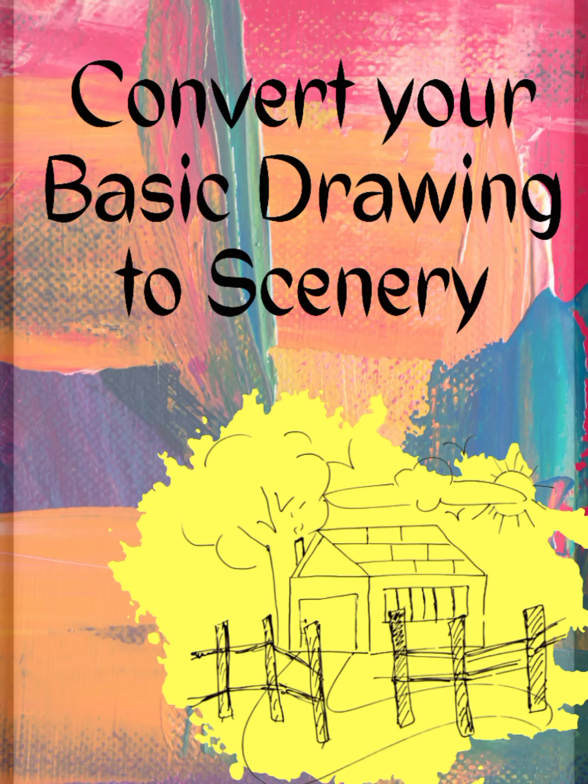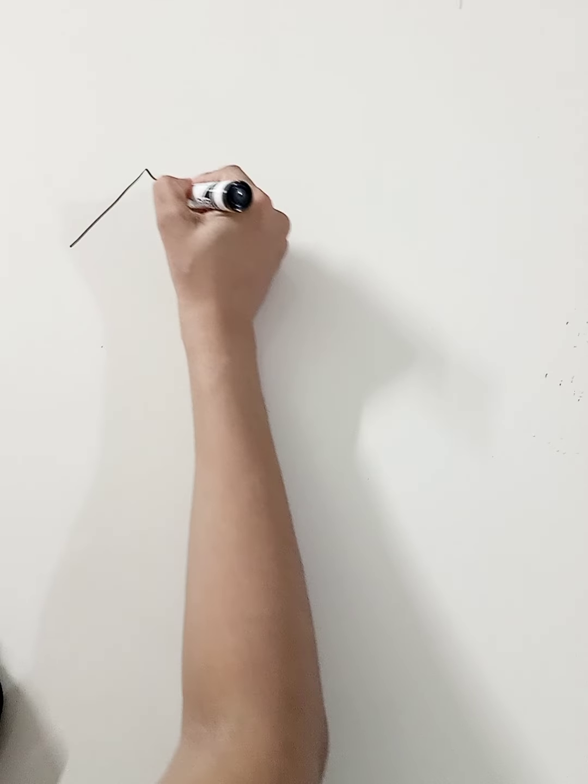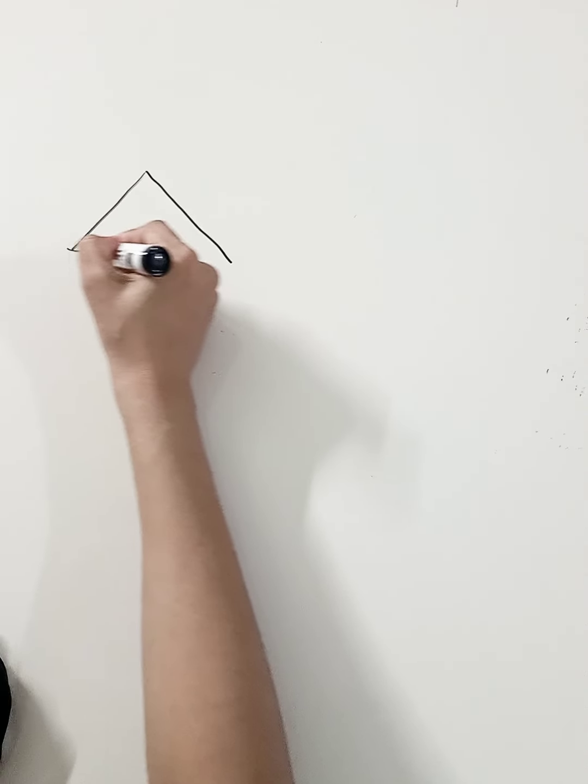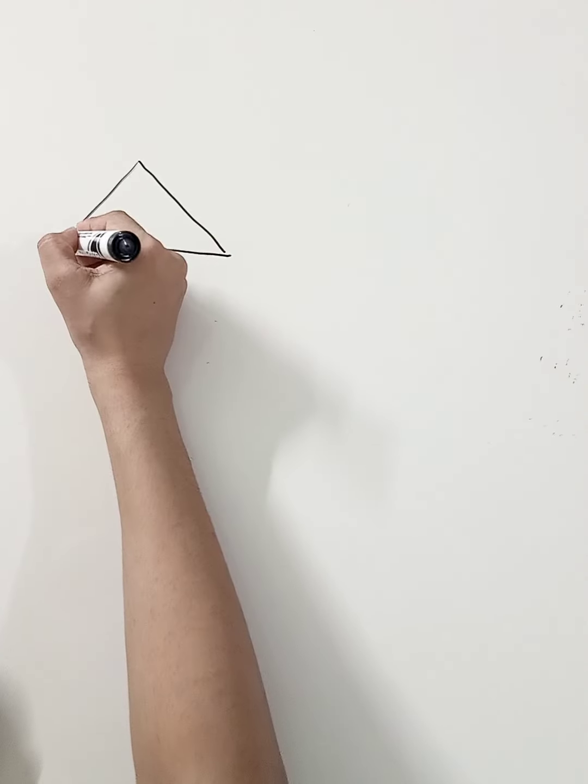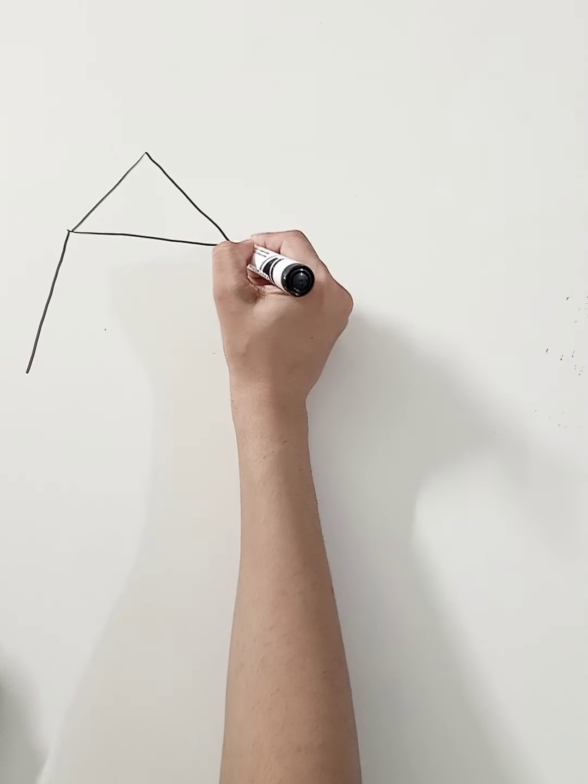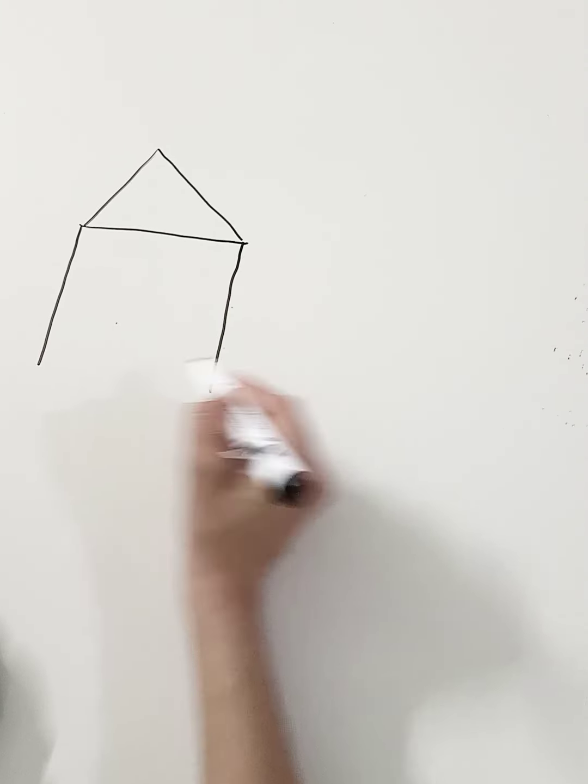Hey guys, welcome back to my channel. Today I'm showing you how to convert your easiest drawing to a scenery. With the help of shapes, we are drawing a house. First of all, draw a triangle and connect a vertical rectangle with it.